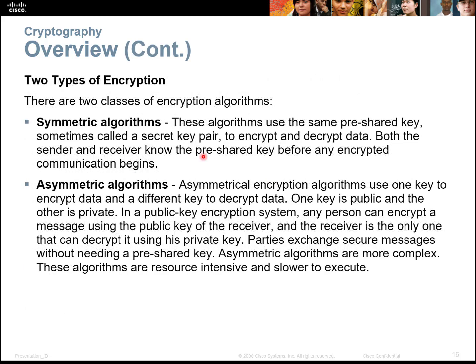There are two types of encryption. One is a symmetric algorithm and one is an asymmetric algorithm. The easiest way to remember this is that symmetric algorithms use the same pair of secret keys for both ends of the data, whereas asymmetric uses a different key on both sides. Symmetric is faster and can handle more data, but is less secure. Asymmetric handles a smaller amount of data but is more secure, because it uses different keys on both sides when data is sent.